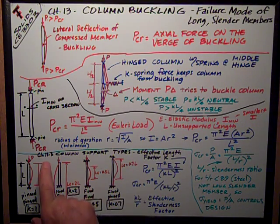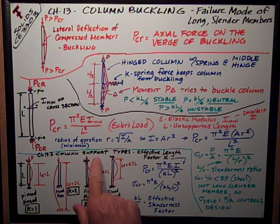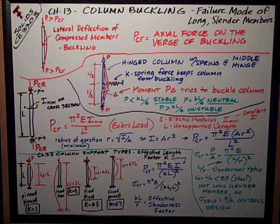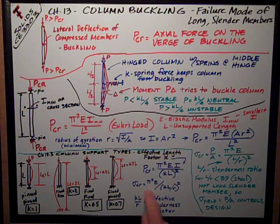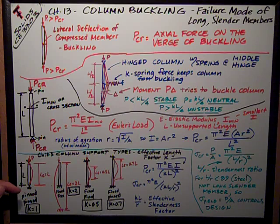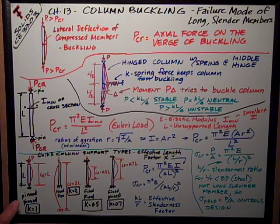A very important factor in column buckling is column support type — how it's supported at the top and bottom. We define the effective length factor K and modify our critical load and critical stress equations by that number. For pin-pinned connections at the top and bottom, its effective length is its actual length — a really unsupported height — and its K factor is 1.